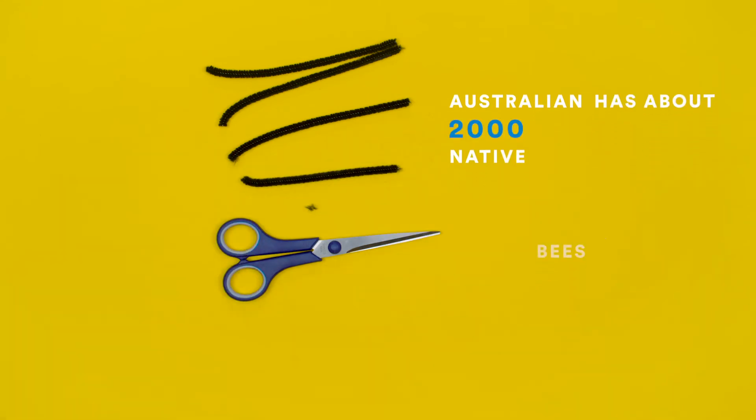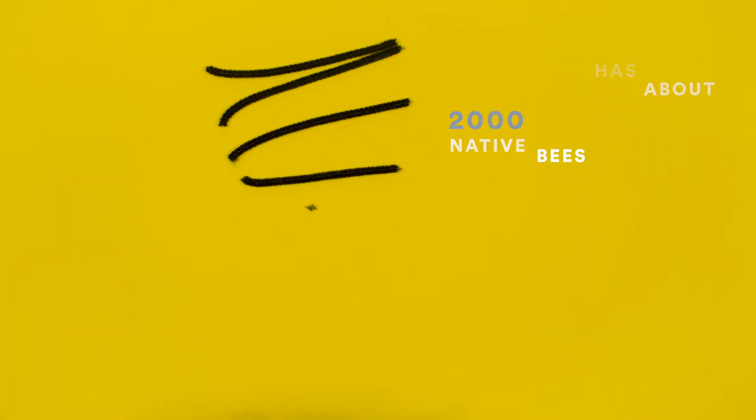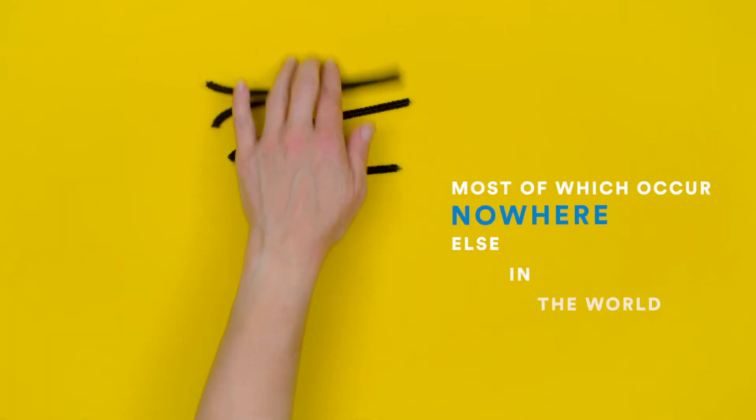Australia has about 2,000 native bees, most of which occur nowhere else in the world.